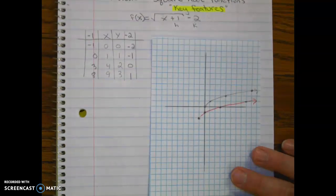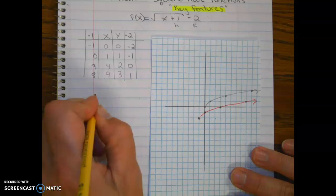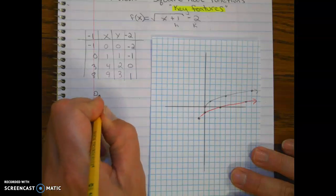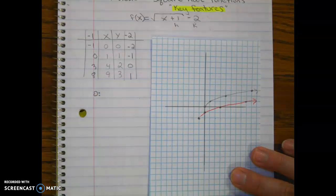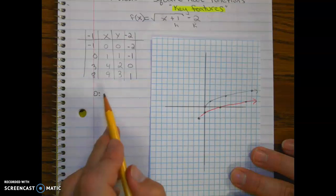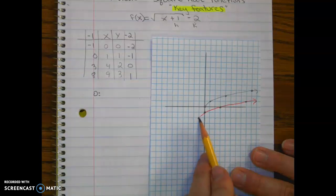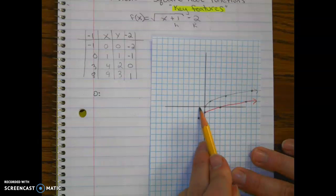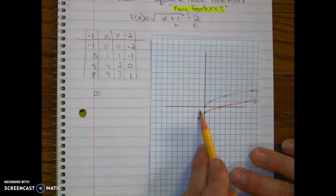Okay, all right. Let's go ahead and write the domain and the range. Now let's start off with the domain. Remember, domain is left to right. So our furthest left point is negative one on the x-axis. This is your furthest left point on the graph: negative one.